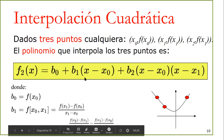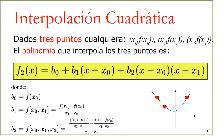Las diferencias divididas corresponden a f(x1) menos f(x0) dividido entre x1 menos x0. Esto corresponde a la diferencia dividida entre x0 y x1, que aparece también en la interpolación lineal. Si quitamos el término b2, tenemos precisamente la interpolación lineal. Como estamos en la cuadrática, el término b2 se calcula con la diferencia dividida de la función f evaluada en x0, x1 y x2: en el numerador, (f(x2)-f(x1))/(x2-x1) menos (f(x1)-f(x0))/(x1-x0), dividido entre x2 menos x0.